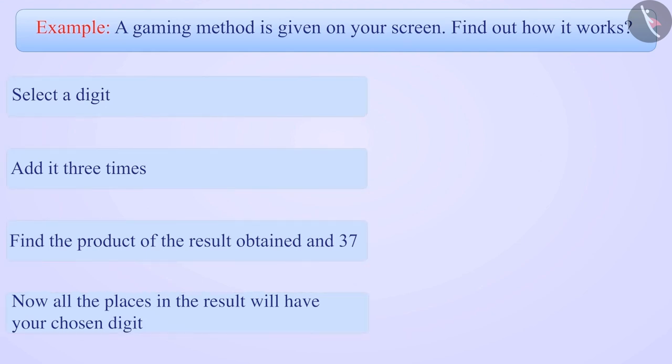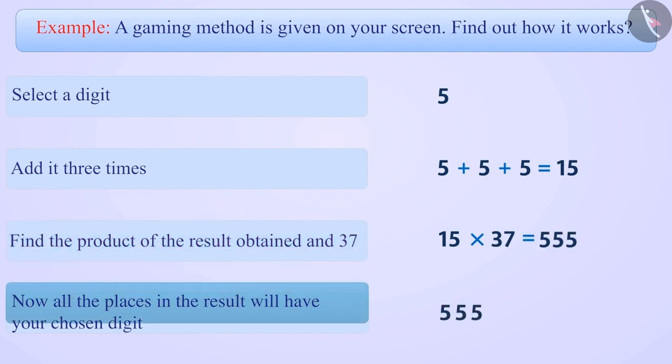Let's understand this method first. Suppose we chose the digit 5. By adding it three times, that is 5 plus 5 plus 5 equals 15. We then multiply 15 and 37 to get 555, in which the chosen digit is 5 in all the places.